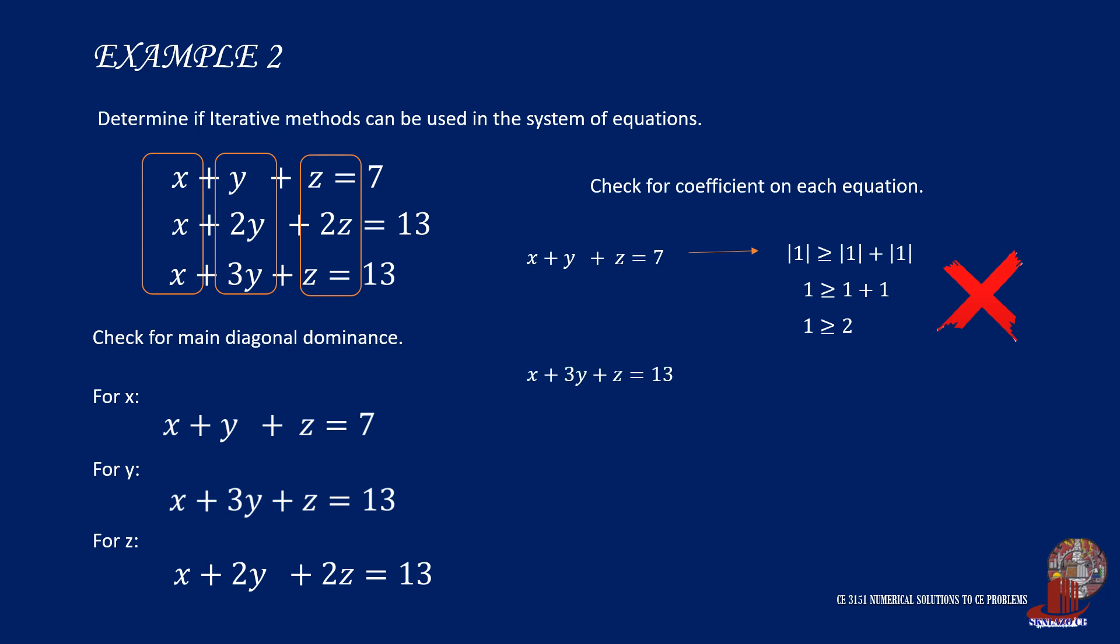Next is absolute value of 3, and is this greater than or equal to the absolute values of 1 and another 1? Well, we get 3 is greater than or equal to 2, which is true.